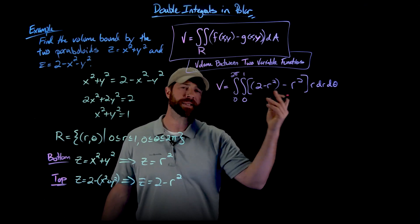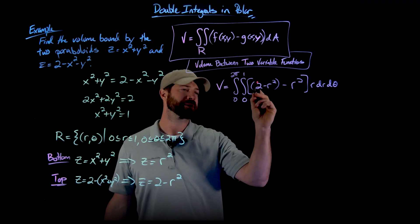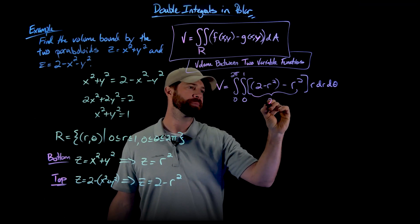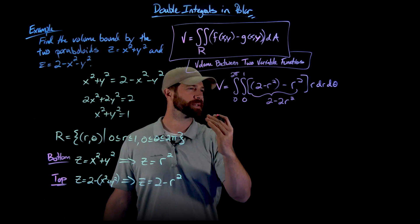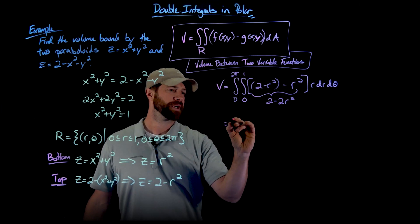But let's clean this up. I'm going to save a little bit of space. So first I'm just going to clean up inside the parentheses, which would be 2 minus 2r squared. I could pull out that factor of 2, but I don't think it's going to make my life much easier. So here we go.